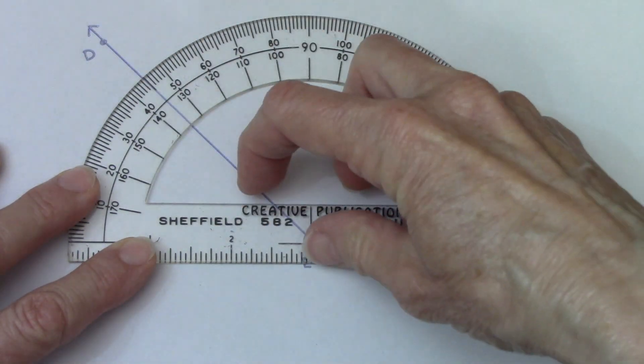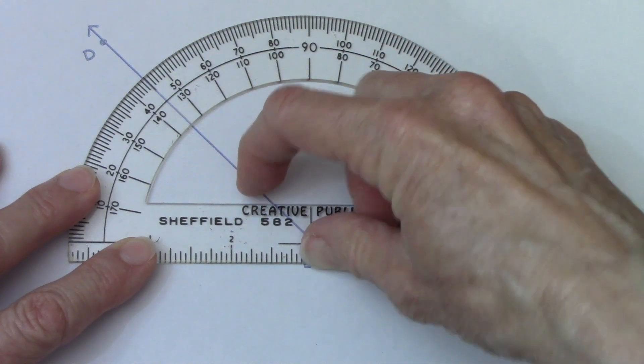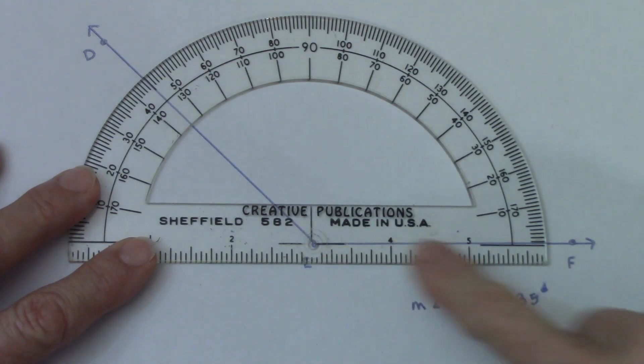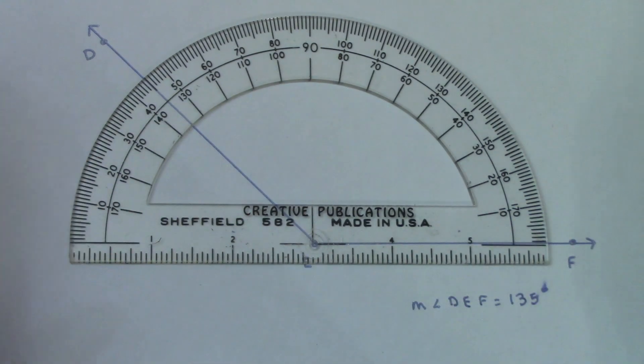Some people think that if you have a small side that it's actually a smaller angle than if you have a large ray. But it's not the length of the sides that matter. It's how open they are.